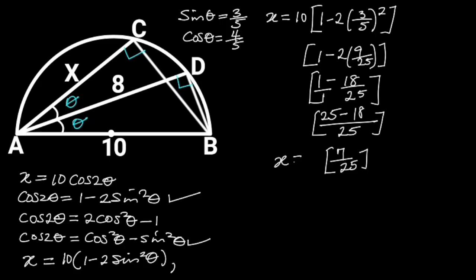So X will be equal to 10 times 7 over 25, which is equal to 70 over 25. 70 over 25 can be reduced to give us 14 over 5. Hence, X is equal to 14 over 5 units.